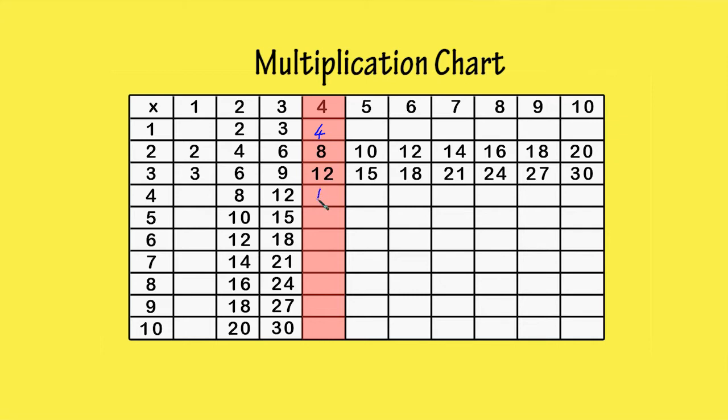4 times 4 is 16. 4 times 5 is 20. 4 times 6 is 24. 4 times 7 is 28. 4 times 8 is 32. 4 times 9 is 36. 4 times 10 is 40.